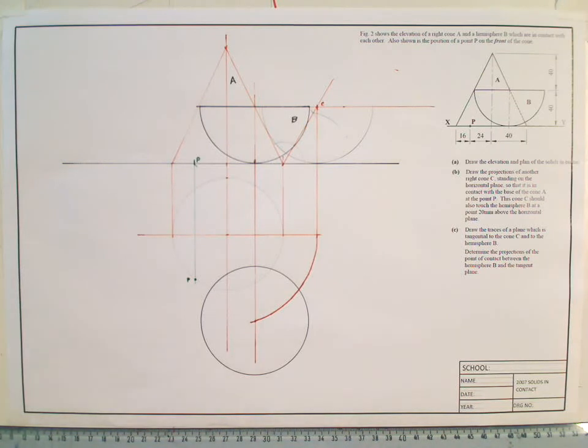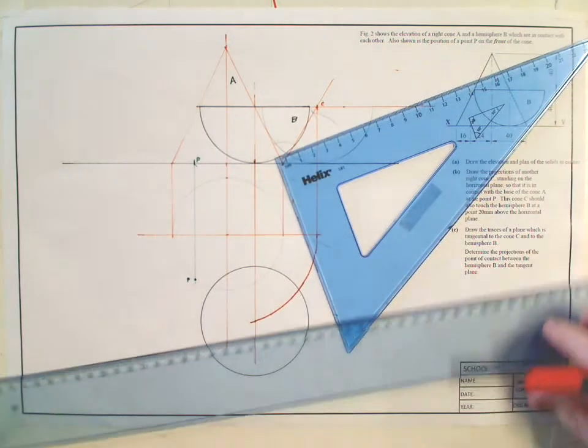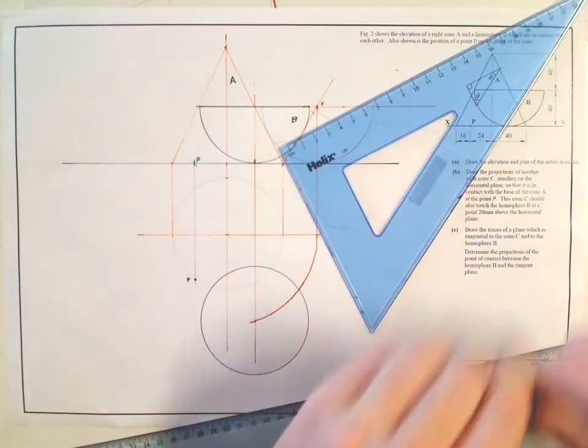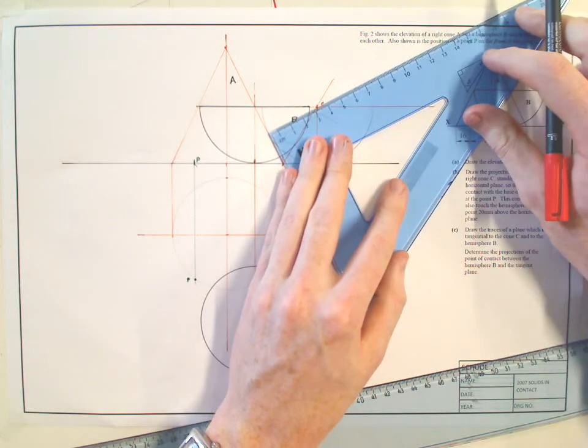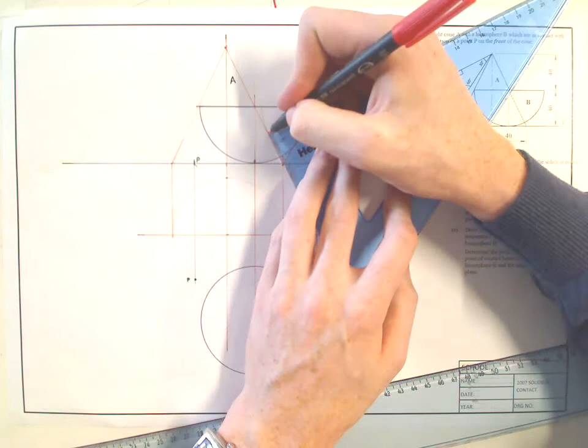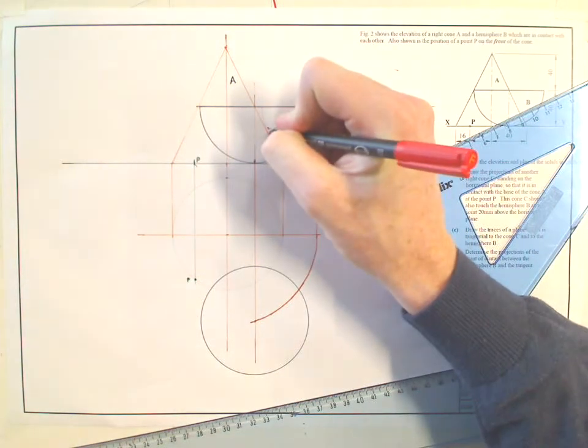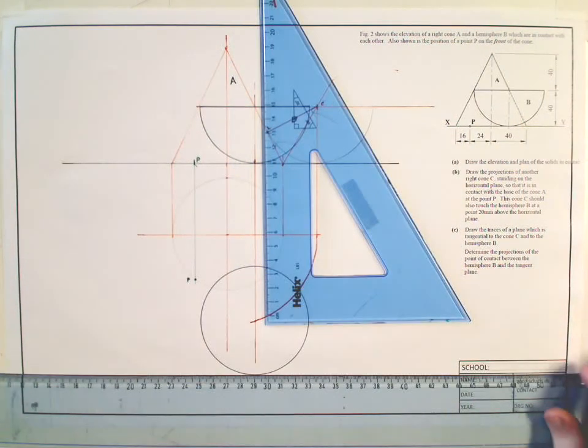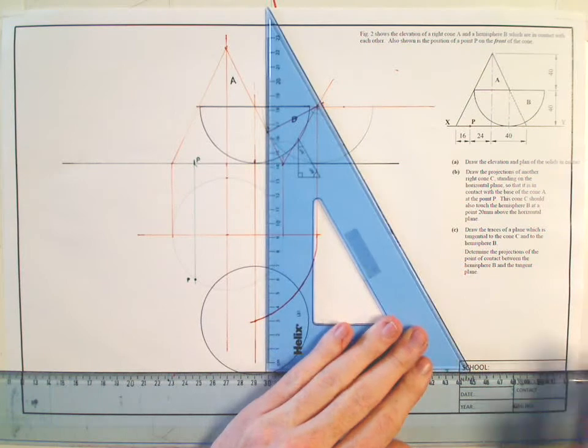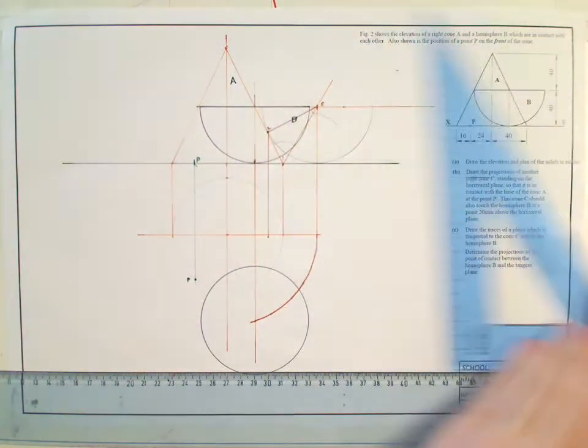Between the hemisphere and the cone, I get my set square and I go at right angles to the edge of the cone. That will give me my point of contact. I then need to bring that down to my elevation.